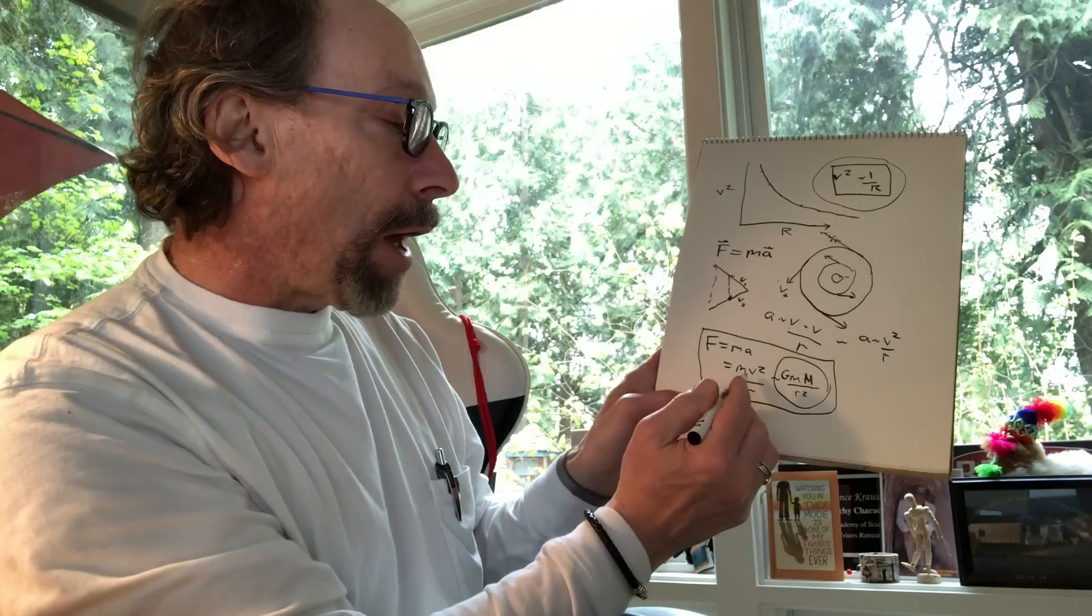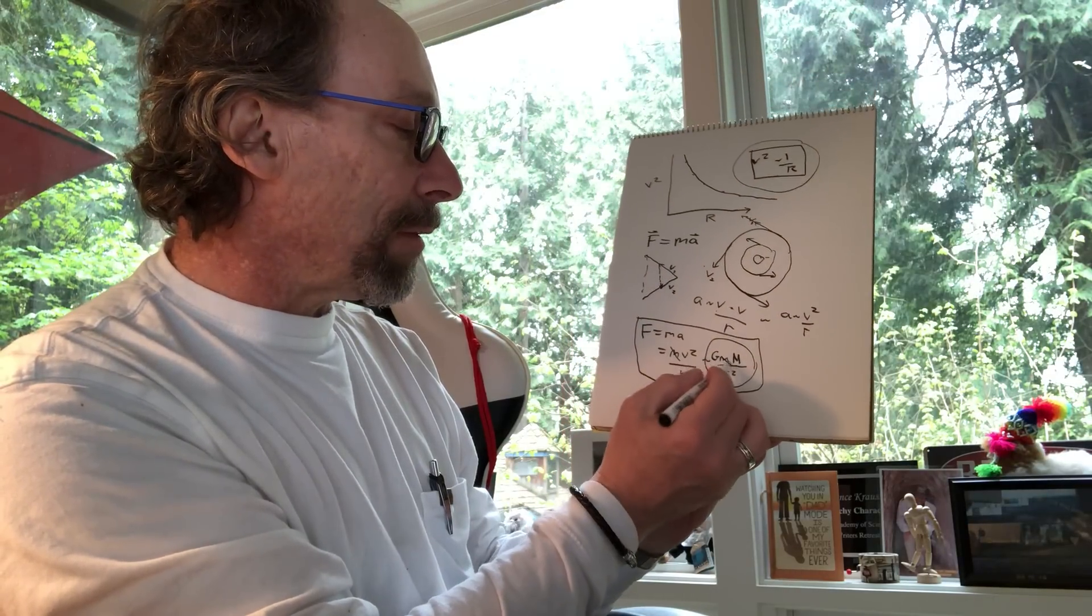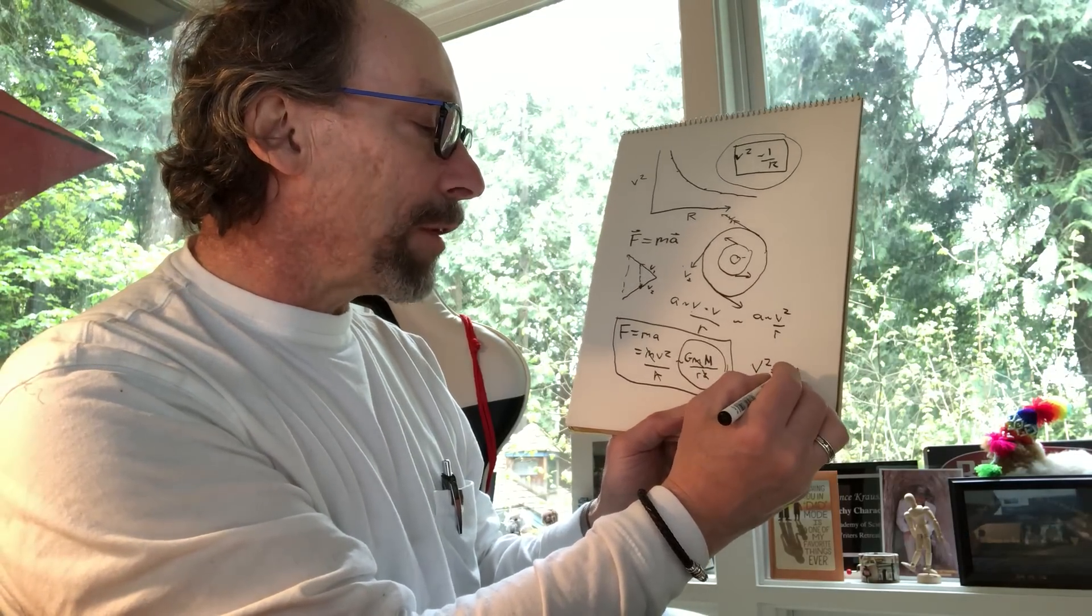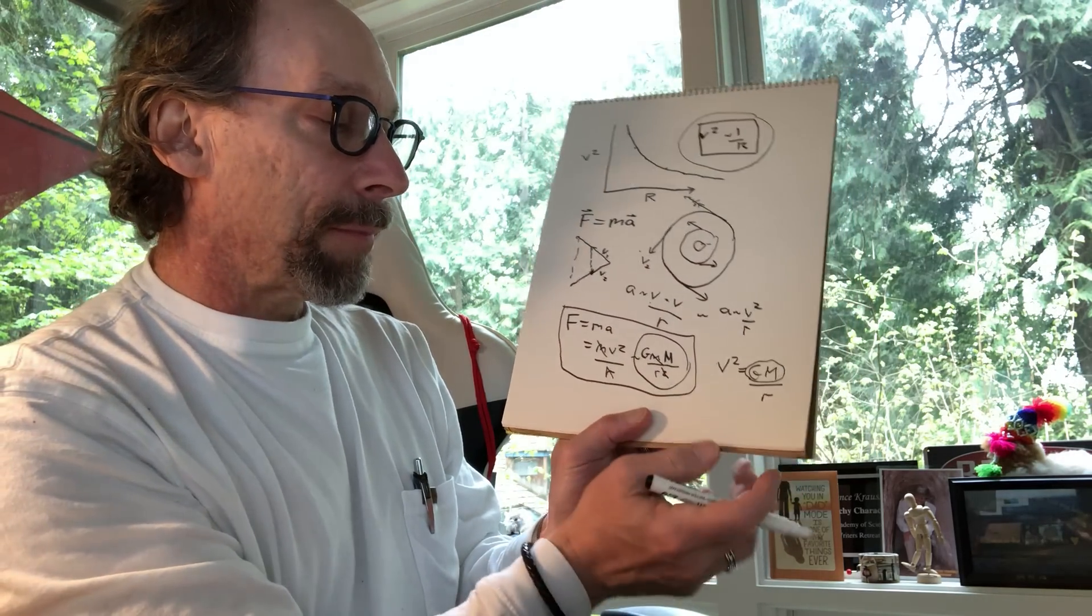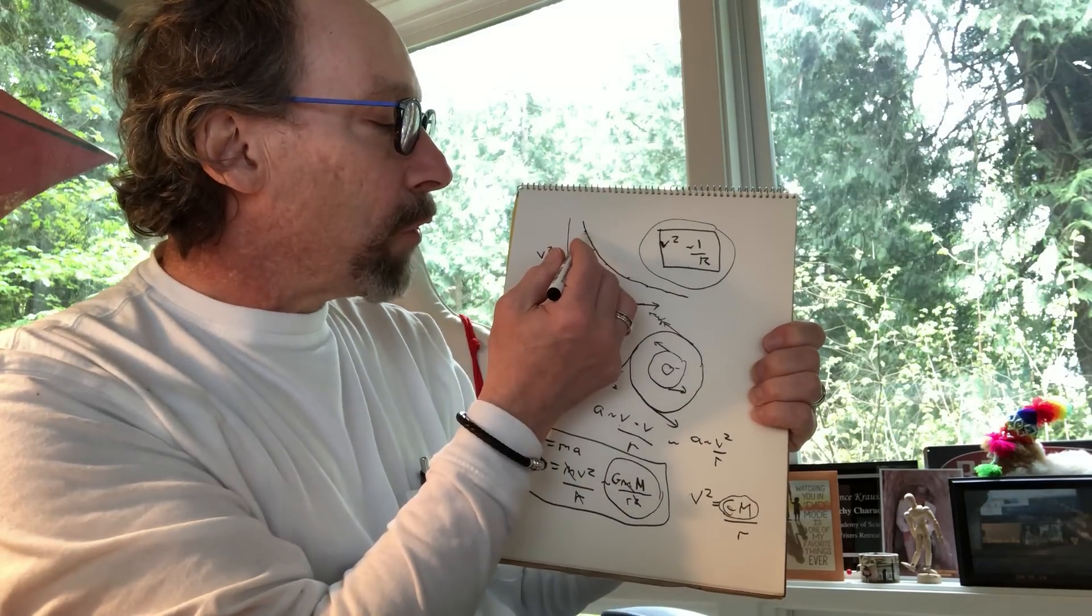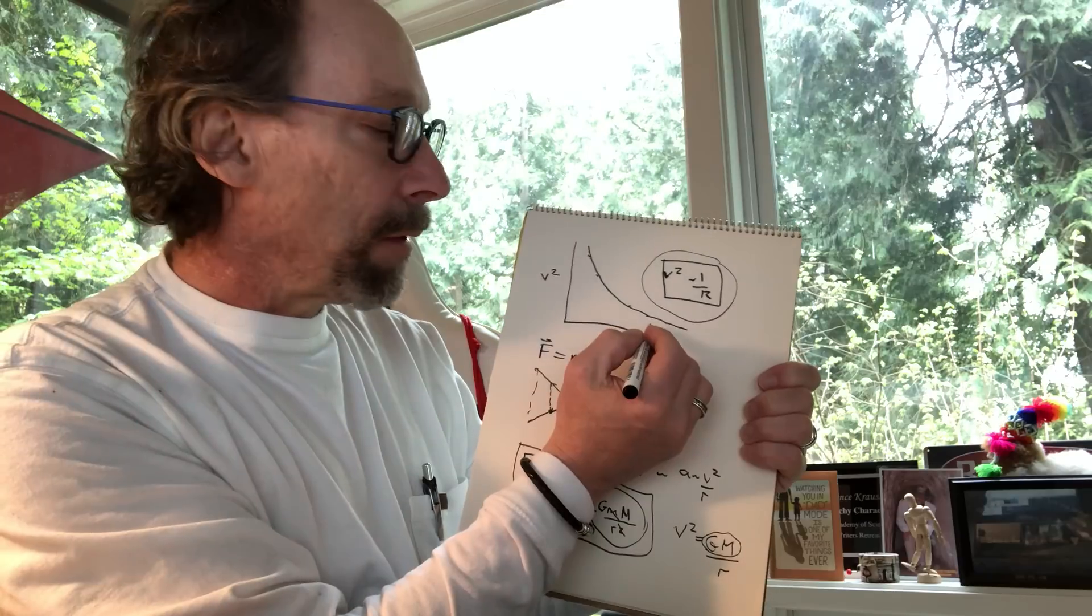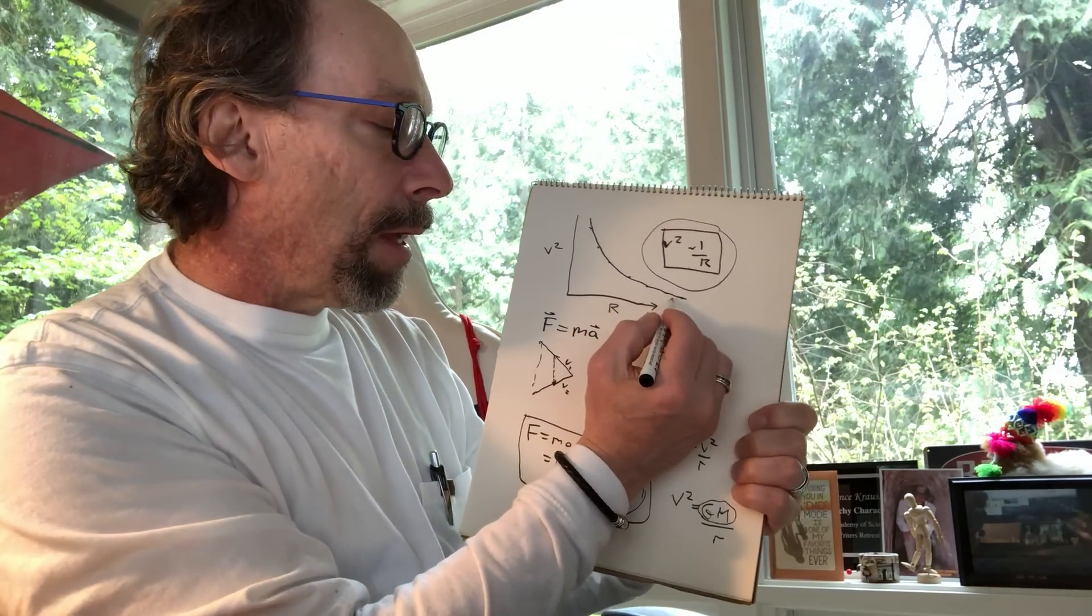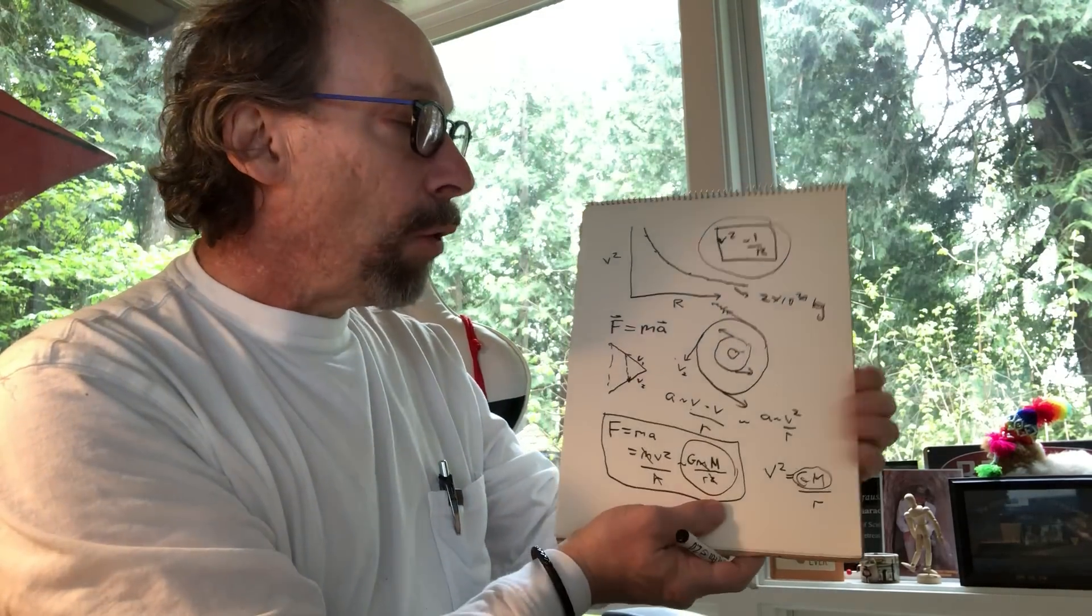Not only does this explain why v squared goes like 1 over r, but it allows us to calculate what v squared is. The mass of the object doesn't matter. One r cancels that r, and you get for an object orbiting the sun, v squared goes like gm over r. But this allows you to weigh the sun. All you have to do is measure the velocities of the planets and know their distance from the sun. By fitting this curve, which follows this law to better than one part in a million, one can derive that the mass of the sun is 2 times 10 to the 30th kilograms.